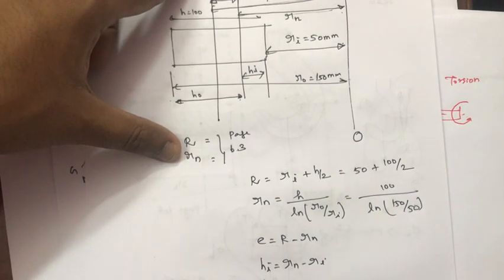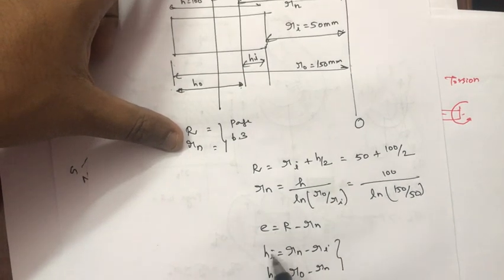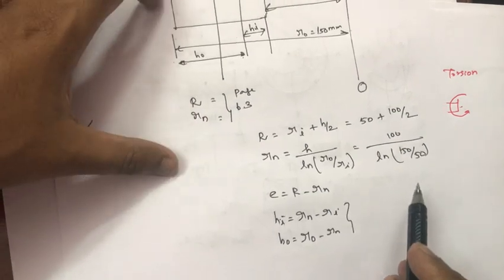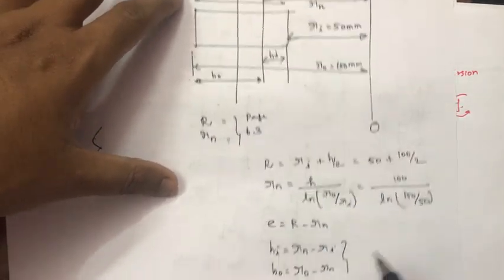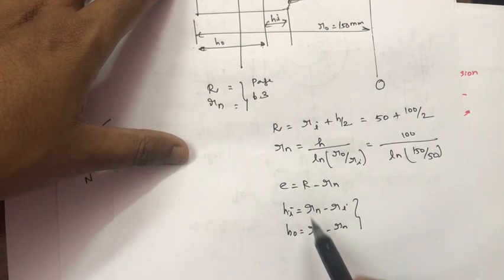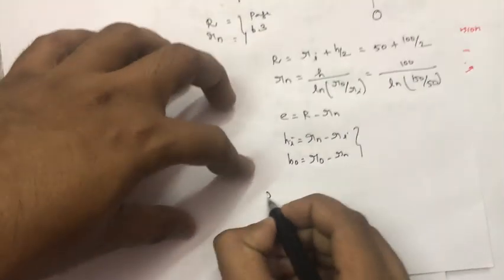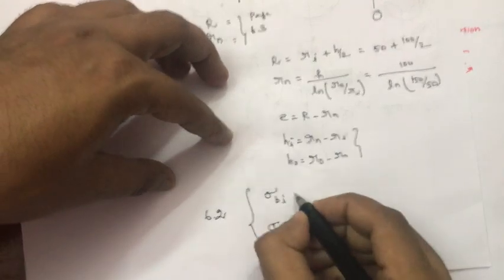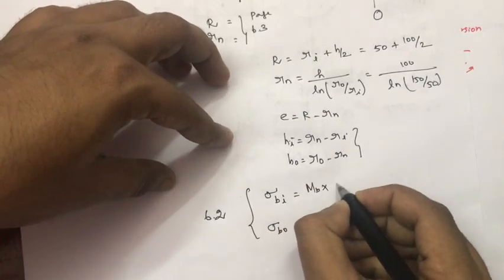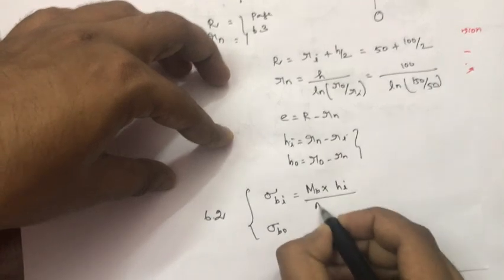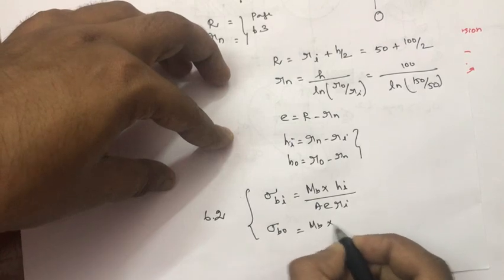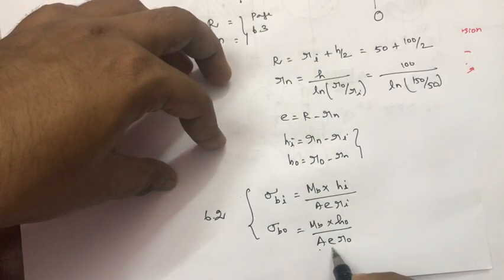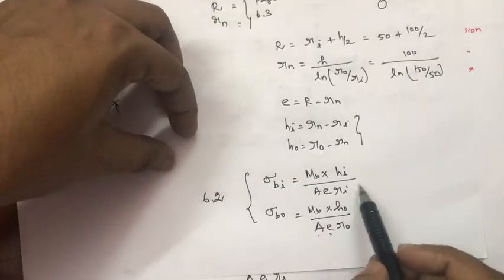We can calculate the hi value, ho value, and eccentricity e value. The inner fiber thickness hi equals Rn minus Ri. The outer fiber thickness ho equals Ro minus Rn. The eccentricity e equals R minus Rn — that is the distance between the centroidal axis and the neutral axis. By knowing Rn, Ri, Ro, and capital R, we can get hi, ho, and e.